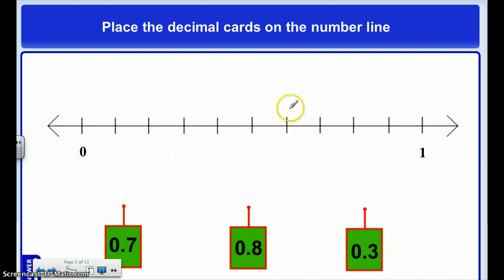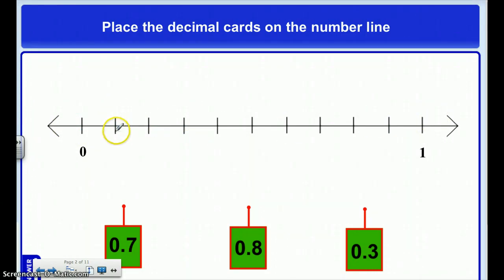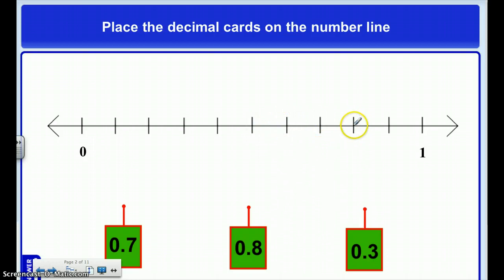So when I count here using this number line, I need to remember that I'm counting by decimals. So if I start here: 1 tenth, 2 tenths, 3 tenths, 4 tenths, 5 tenths, 6 tenths, 7 tenths, 8 tenths, 9 tenths, and 10 tenths — that works.